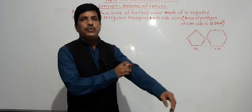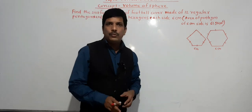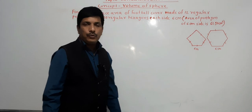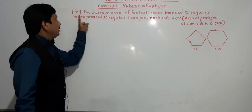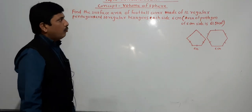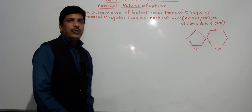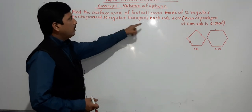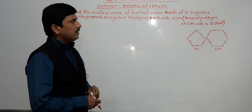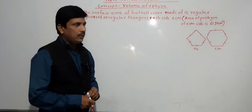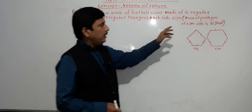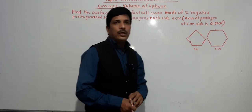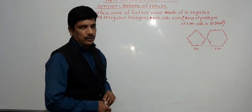Hello everybody, today we are going to see some problems which depend on the concept of volume of sphere. The first problem is: find the surface area of a football cover made of 12 regular pentagons and 20 regular hexagons, each side 6 cm. It is given that the area of a pentagon with 6 cm side is 61.92 cm square.